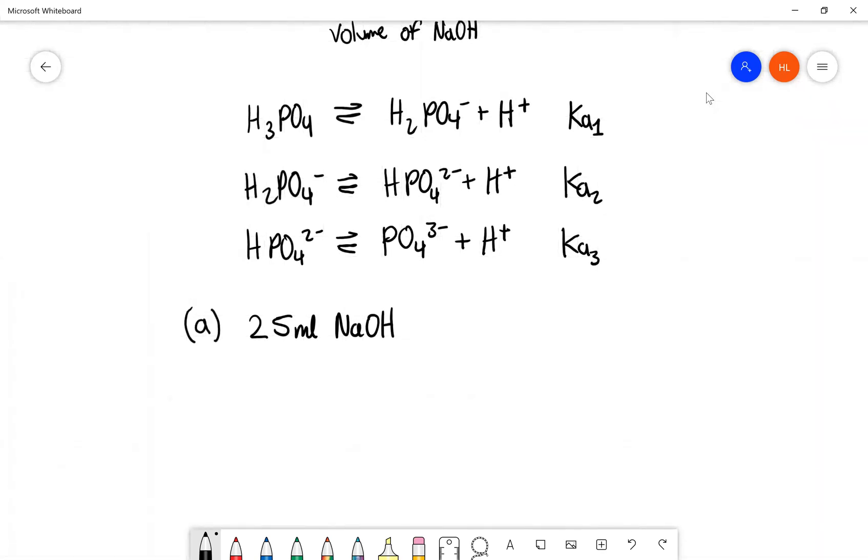So first thing we should think about on the titration curve, we should think about how are we going to neutralize the NaOH? So the hydroxide ions in solution, what are we going to use to neutralize this? And the answer to that question would be the first reaction, so that would be H3PO4. Since this is the dominant species that is inside our solution at this time, so H3PO4.